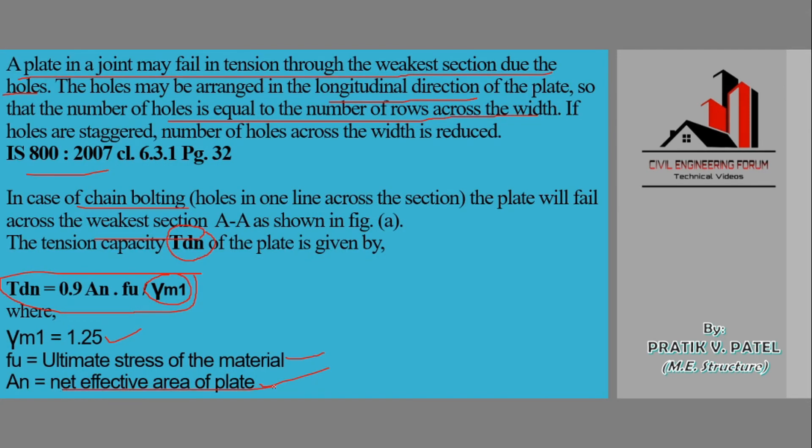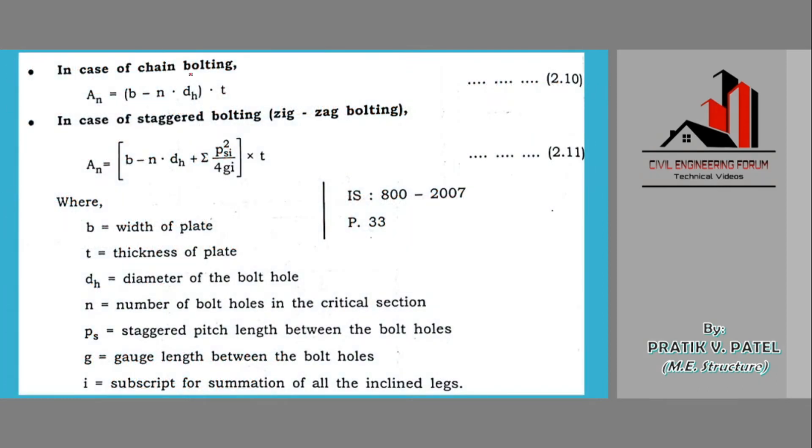In case of chain bolting, if we are using chain bolting the number of holes are more across the cross section. Then the area is b minus n into diameter of the hole into t. Here we can use dh to show the diameter of the hole.